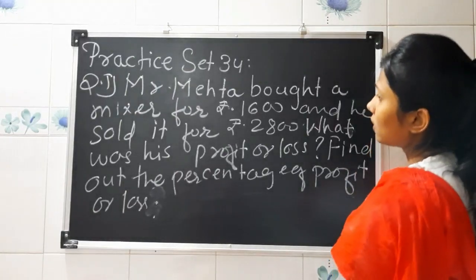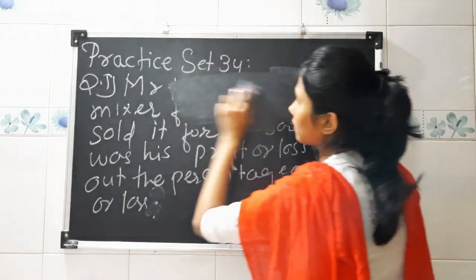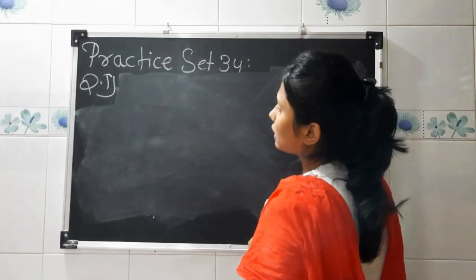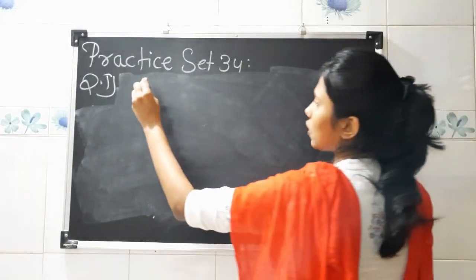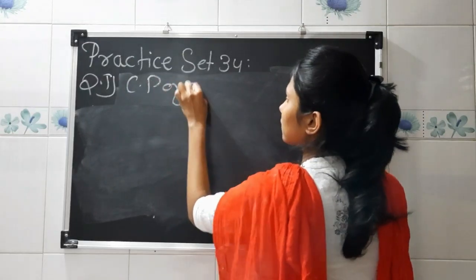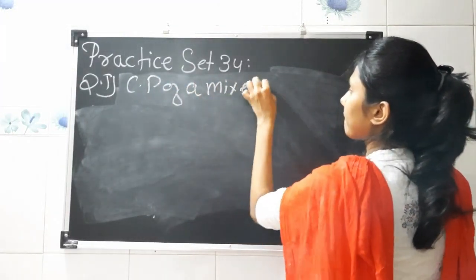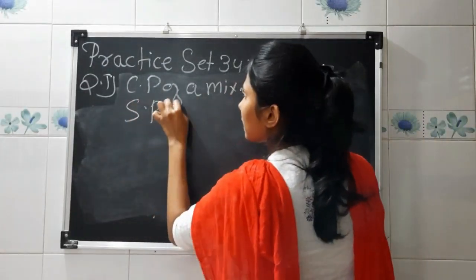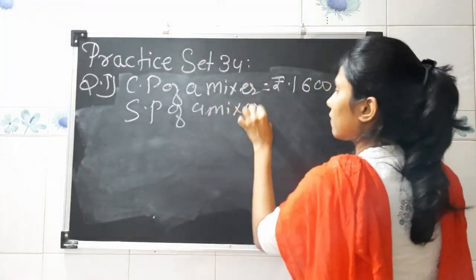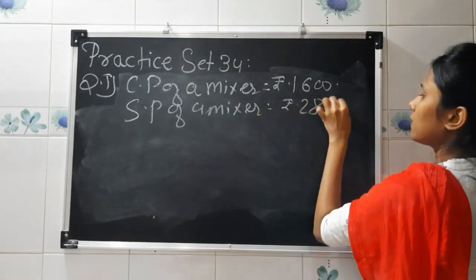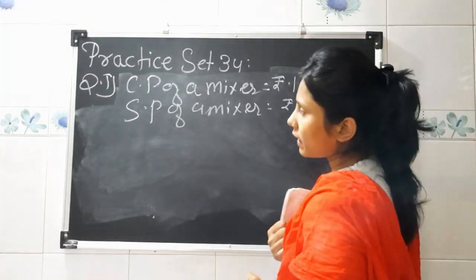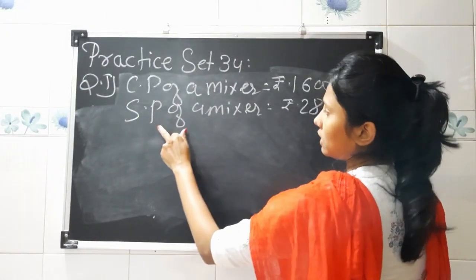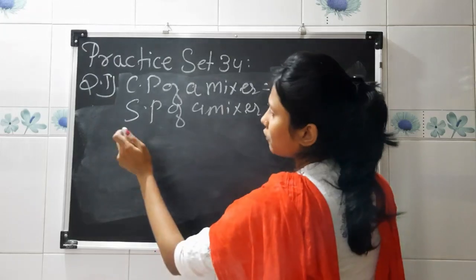Now let's solve this sum. According to the question, the cost price of a mixer is rupees 1600 and the selling price of a mixer is rupees 2800. We need to find out whether it is a profit or loss, and also find the profit or loss percentage. Here, selling price is greater than cost price. Therefore, it is a profit.